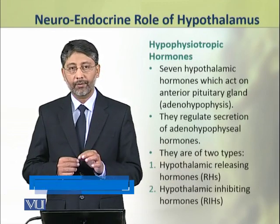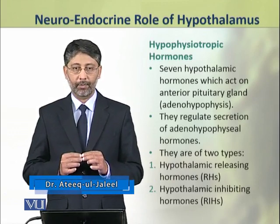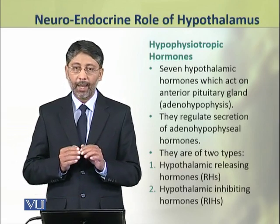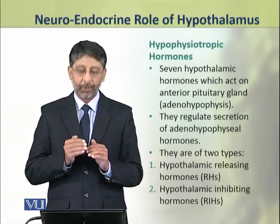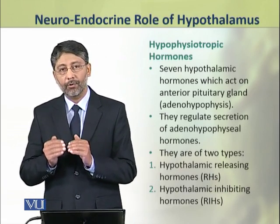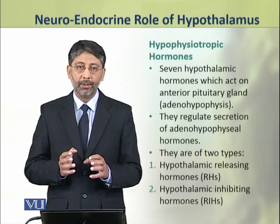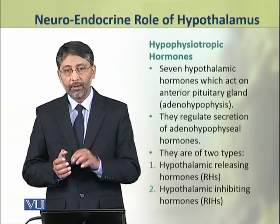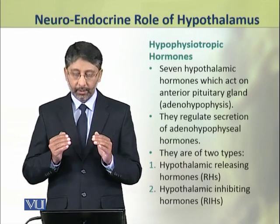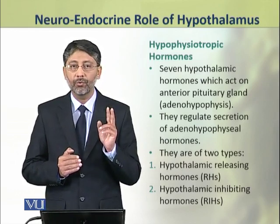First we shall discuss the hypophysiotropic hormones. Seven hypothalamic hormones act on the anterior pituitary gland, that is adenohypophysis. They regulate the secretion of adenohypophysial hormones. These hormones of hypothalamus are of two types.